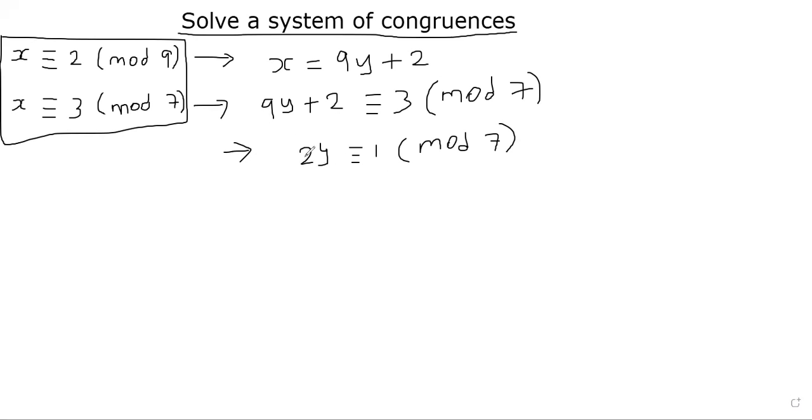If you just look at it, 2 times 4 is 8, and 8 is congruent to 1 mod 7. So y must be congruent to 4 mod 7. That's the meaning for the inverse anyways.